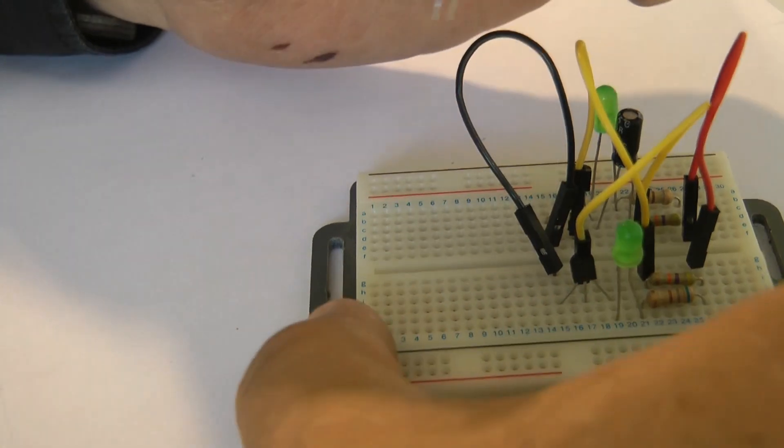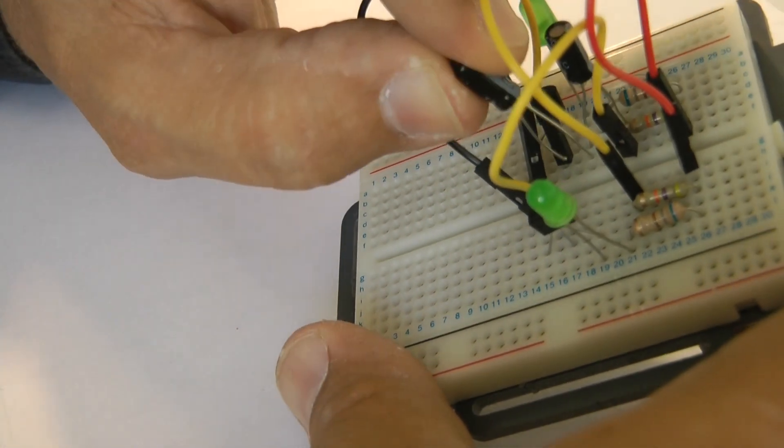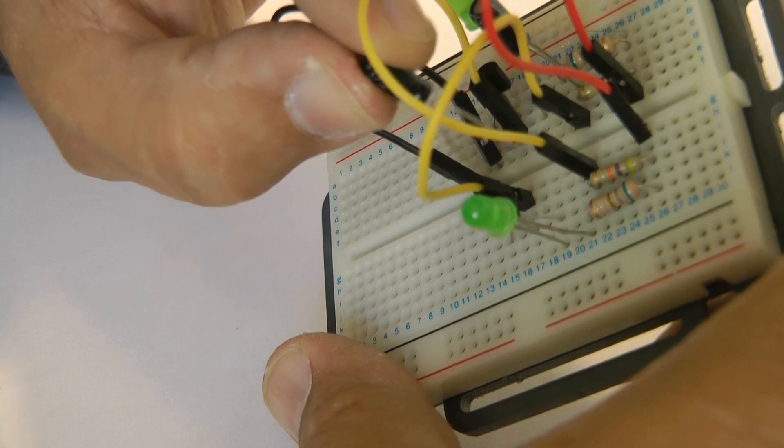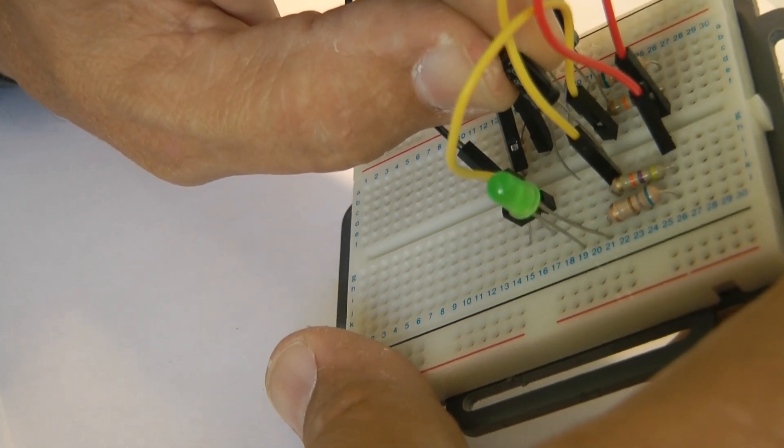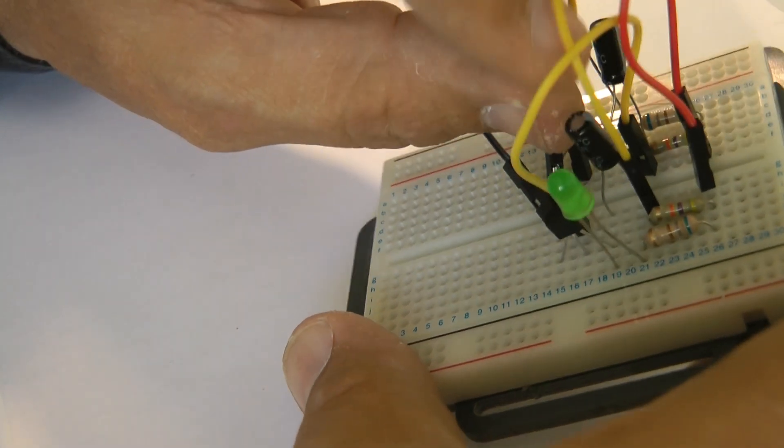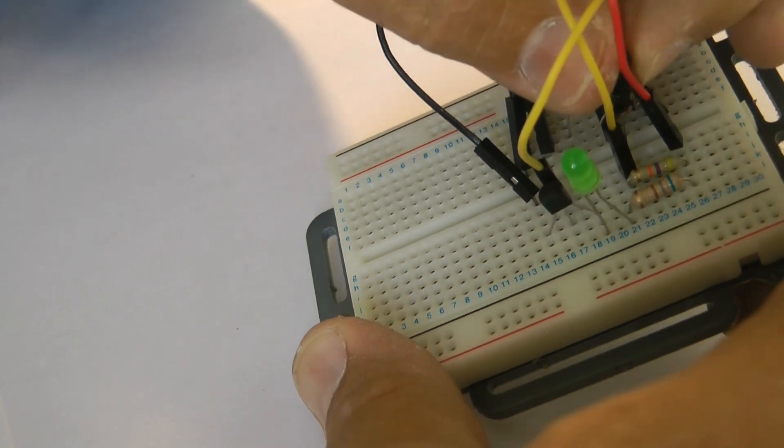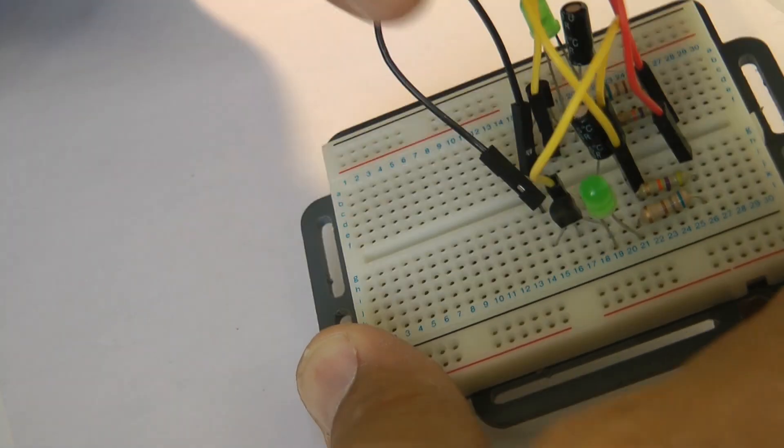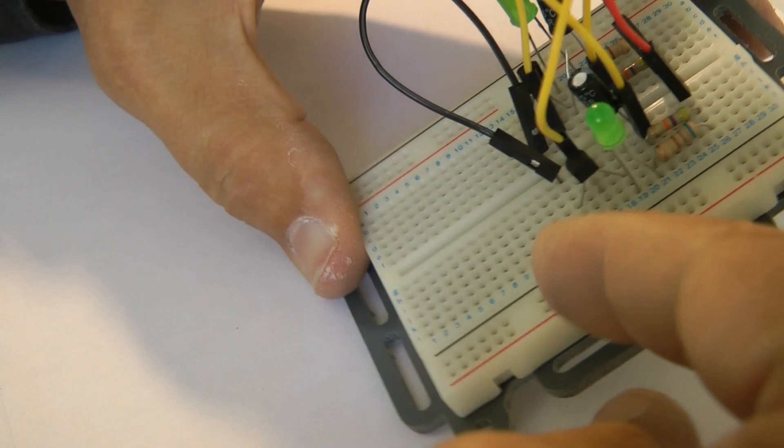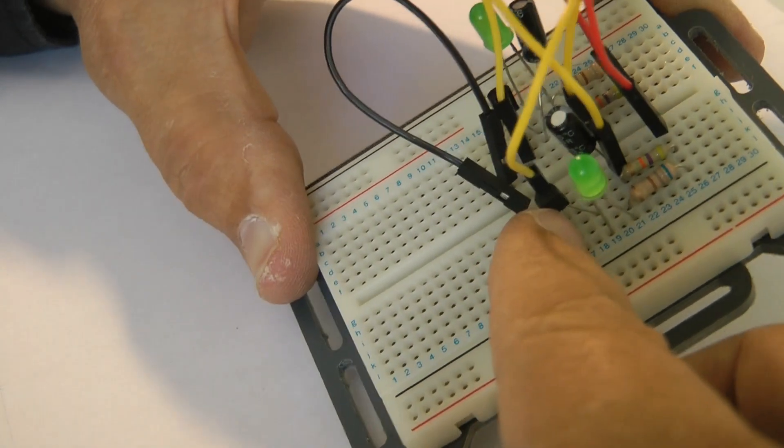So the negative side of this needs to be in there with the resistor one. And the positive end of this capacitor needs to go into the same row on the breadboard as the collector leg of this transistor.